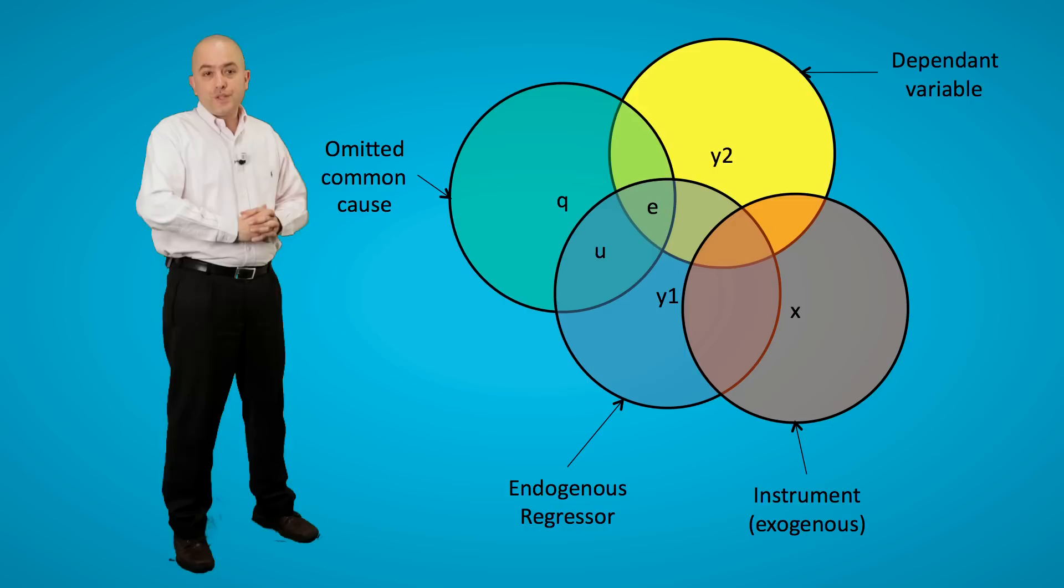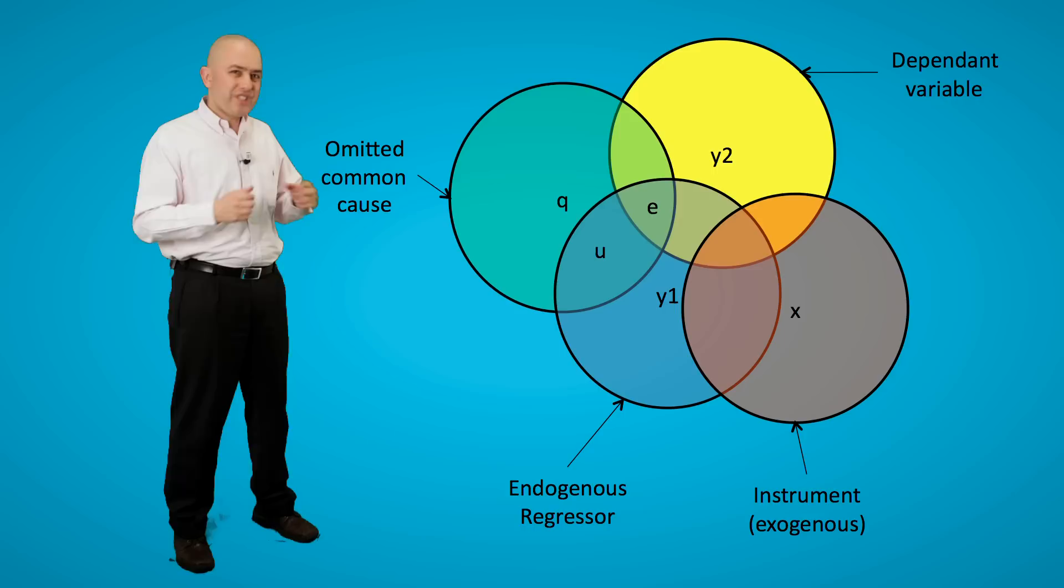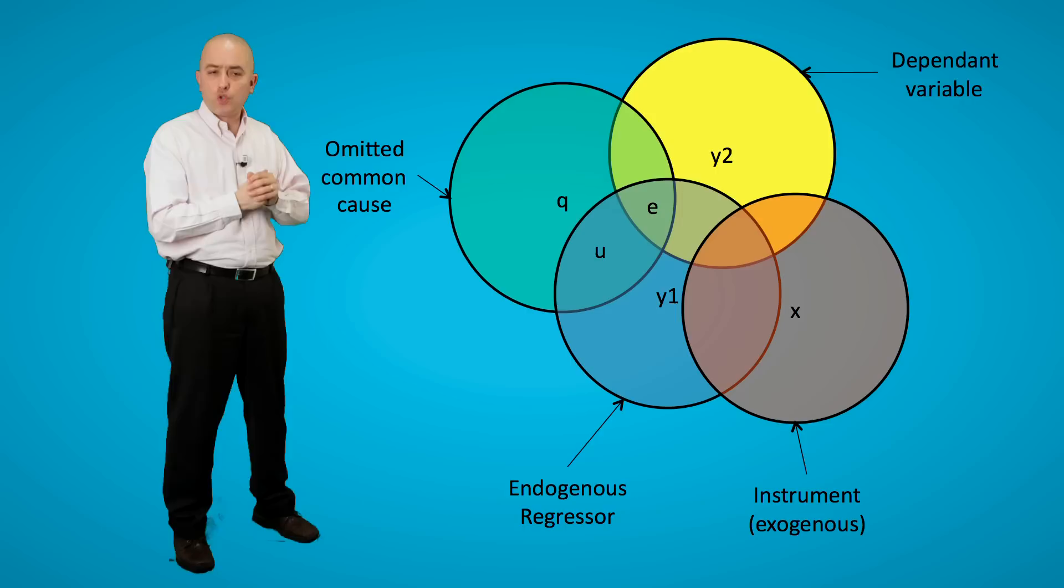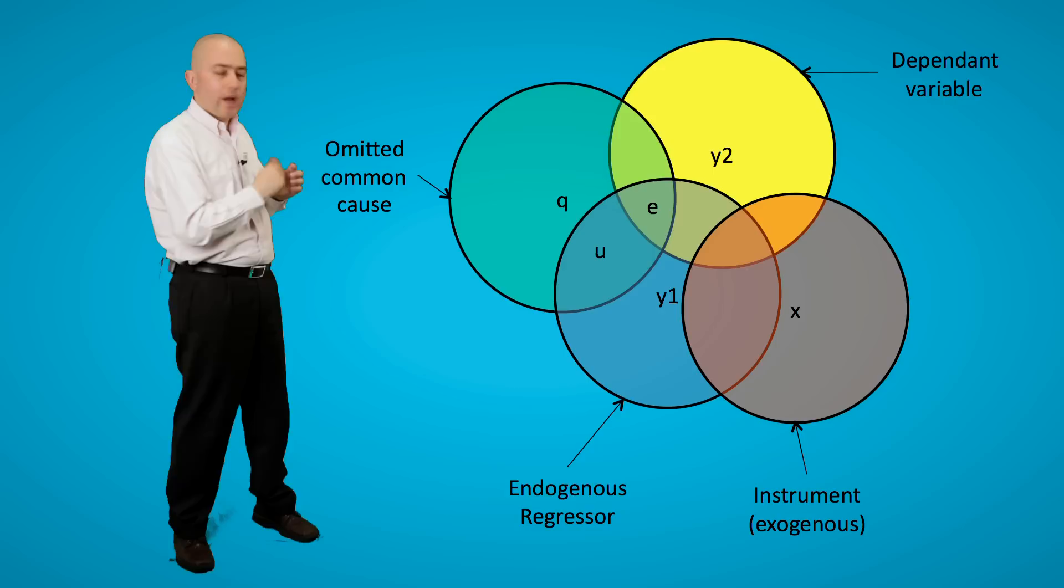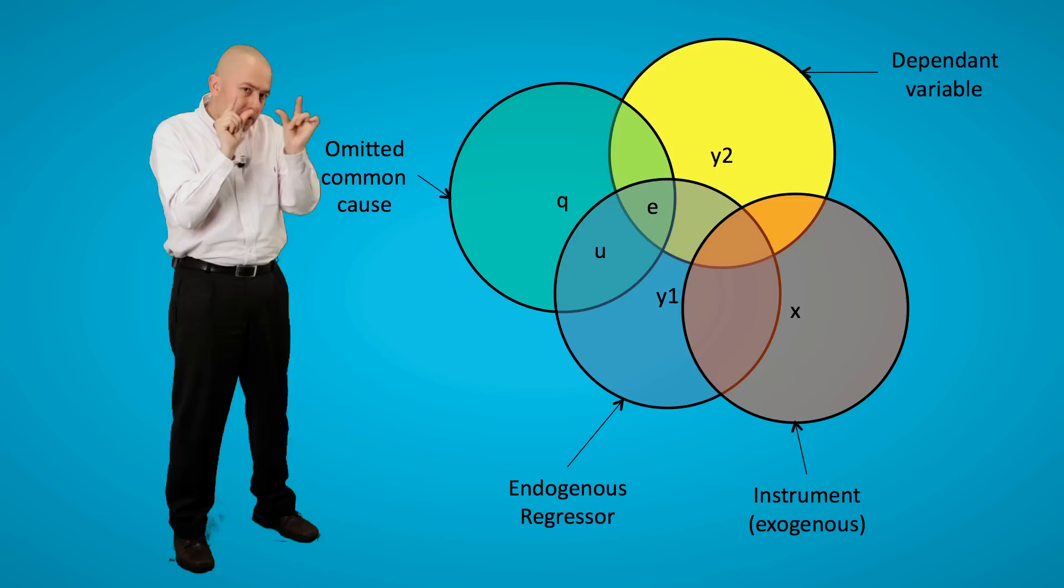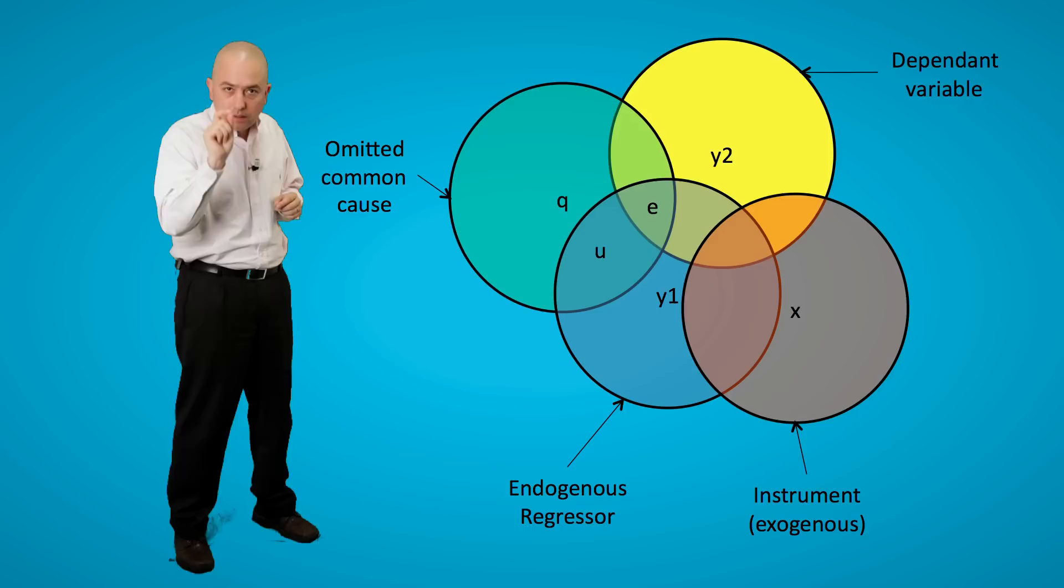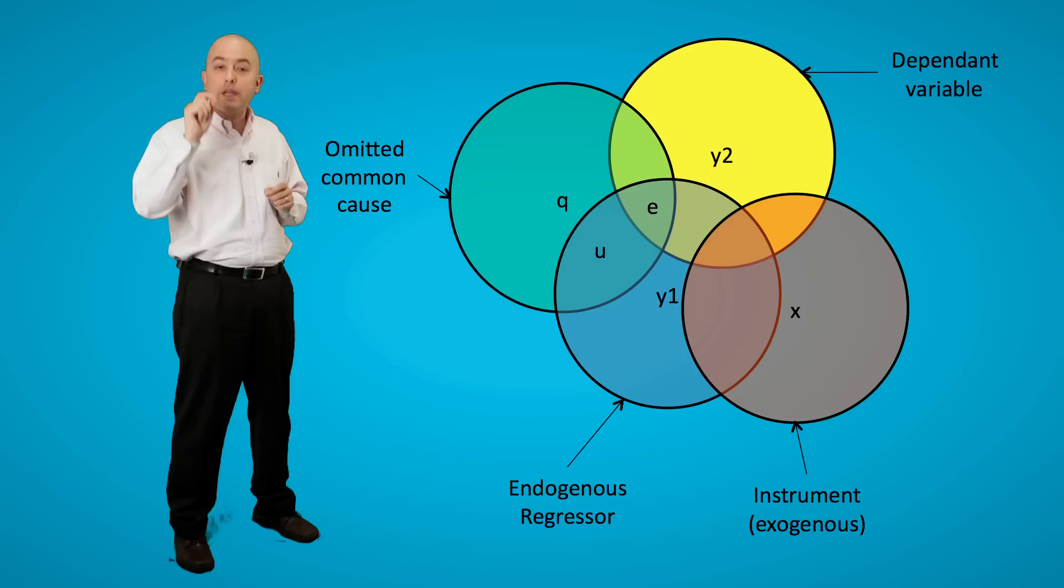The instrument in this case is X. As you can see, X overlaps both with Y1 and Y2. Because X is exogenous, it does not overlap at all with the omitted common cause, Q, or any other causes, and I have not put them all in the model. We are just isolating Q just to demonstrate the point. So what the estimator is going to do is it is going to look at the share of overlapping variance that X has with Y1 and Y2 to estimate the relationship of Y1 with Y2. Even though it is only using a smaller portion of the overlap of Y1 with Y2, it will still estimate it consistently.